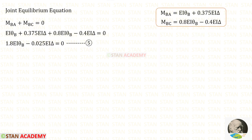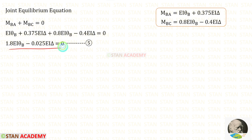Now let us write the joint equilibrium equation. At joint B, when we add MBA and MBC, the sum equals zero. Substituting the expressions for MBA and MBC and simplifying, we obtain an equation which we will call equation number 5.